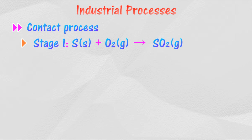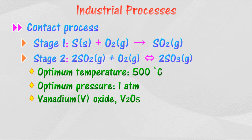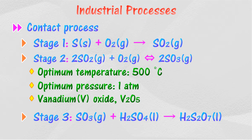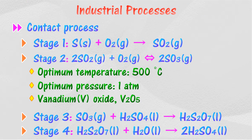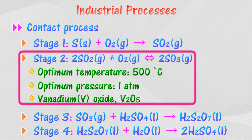The Contact Process undergoes four stages to manufacture sulfuric acid. Stage 1 is the production of sulfur dioxide gas. Stage 2 converts sulfur dioxide to sulfur trioxide. Stage 3 is the production of oleum. Lastly, Stage 4 is the production of sulfuric acid. In Stage 2, the rate of reaction is increased by adding vanadium(V) oxide as a catalyst at a temperature of 500 degrees Celsius under a pressure of one atmosphere.